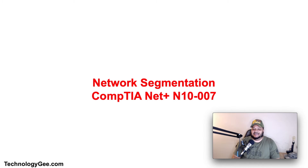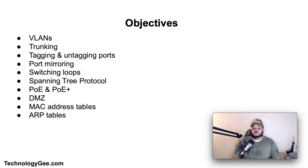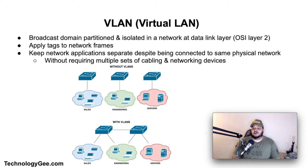What's up everybody, this is your boy Tech G back with another video to help you successfully pass the CompTIA Network+ N10-007 certification. In this video you're going to learn about network segmentation such as VLANs, trunking, tagging and untagging ports, port mirroring, switching loops, spanning tree protocol, power over ethernet, power over ethernet plus, DMZs, MAC address tables, and ARP tables.